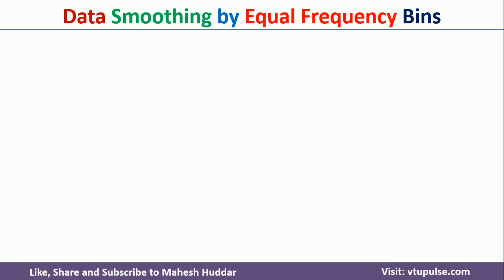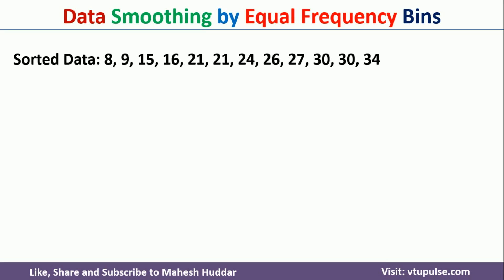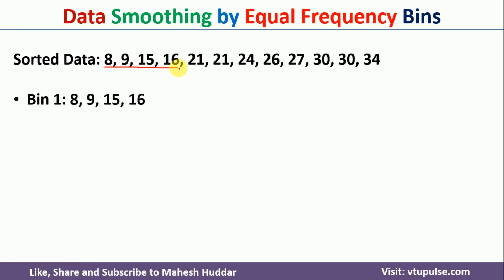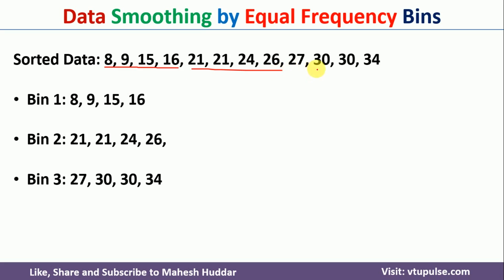We will start with the first one, that is data smoothing by equal frequency bins. Let us assume that the bin size is equal to 4. If the bin size is equal to 4, we need to count how many data points are there. There are 12 data points, so we get 12 divided by 4, giving 3 bins. Bin 1 contains the first 4 data points: 8, 9, 15, and 16. Bin 2 contains the next 4 data points: 21, 21, 24, 26. And bin 3 contains the next 4 data points. This is the simplest technique to create bins using equal frequency bins.